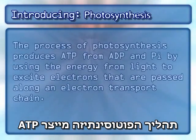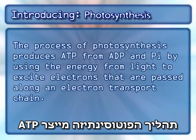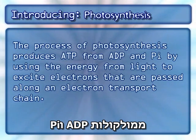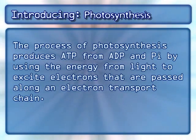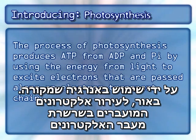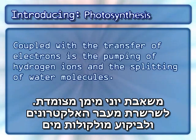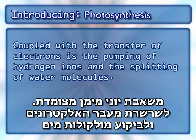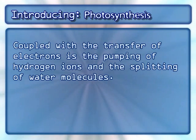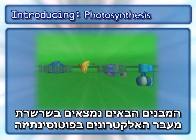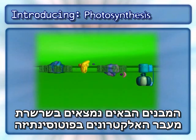The process of photosynthesis produces ATP from ADP and Pi by using the energy from light to excite electrons that are passed along an electron transport chain. Coupled with the transfer of electrons is the pumping of hydrogen ions and the splitting of water molecules. The following complexes are found in the photosynthesis electron transport chain.